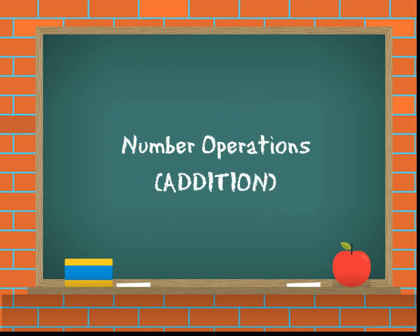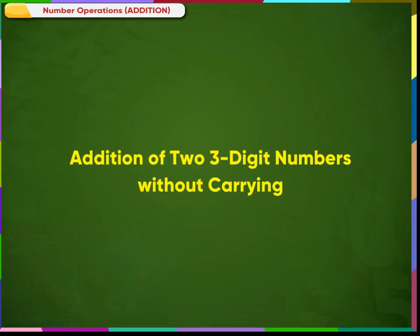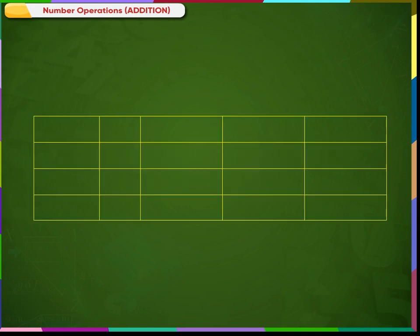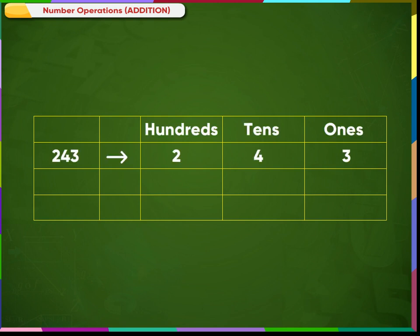Number Operations: Addition of two three-digit numbers without carrying. In this case, we will add hundreds, tens and ones. We will always start adding from the ones place, that is, from the right-hand side. Let us consider examples to understand this better.